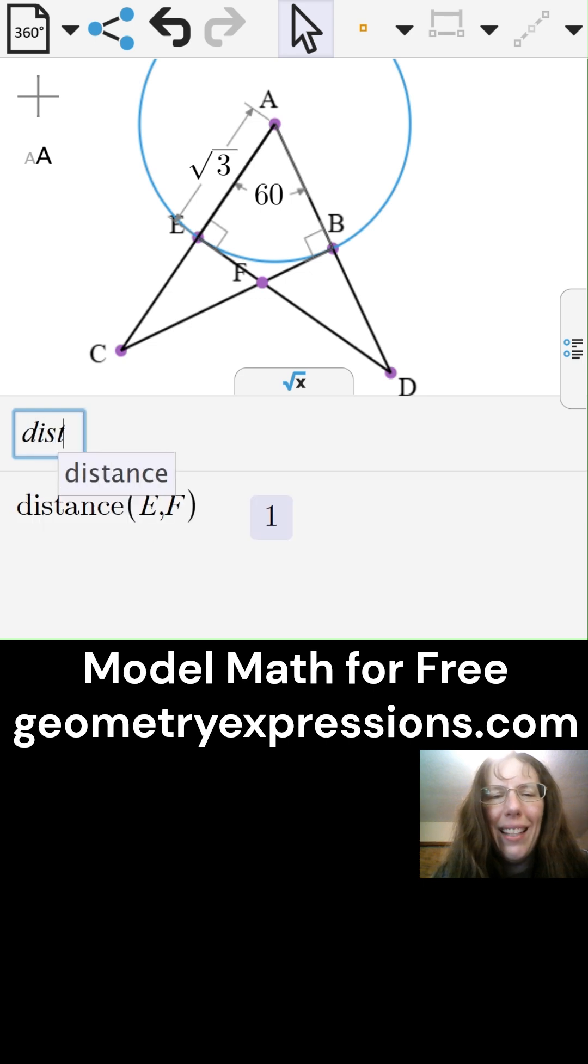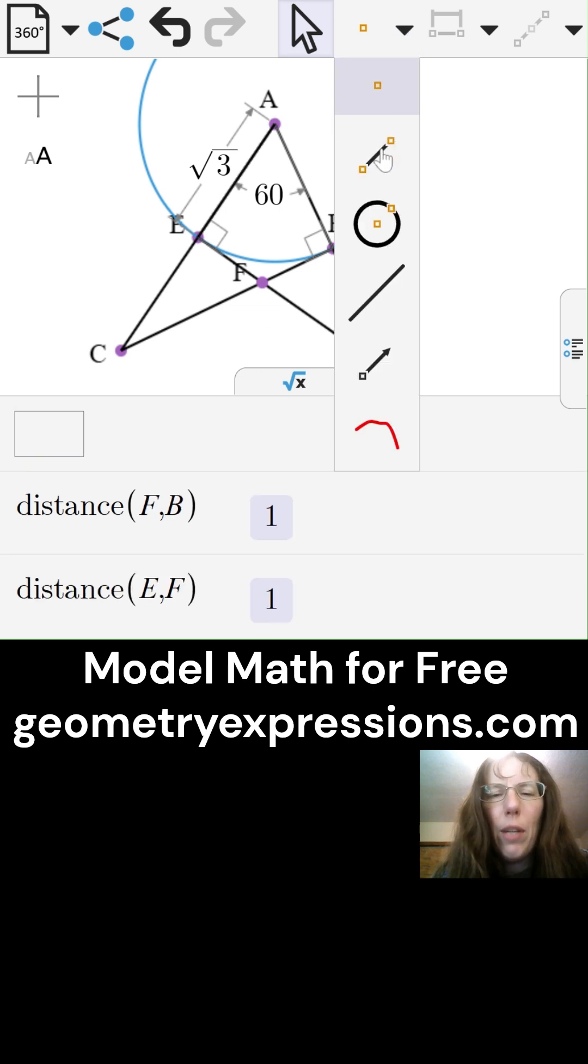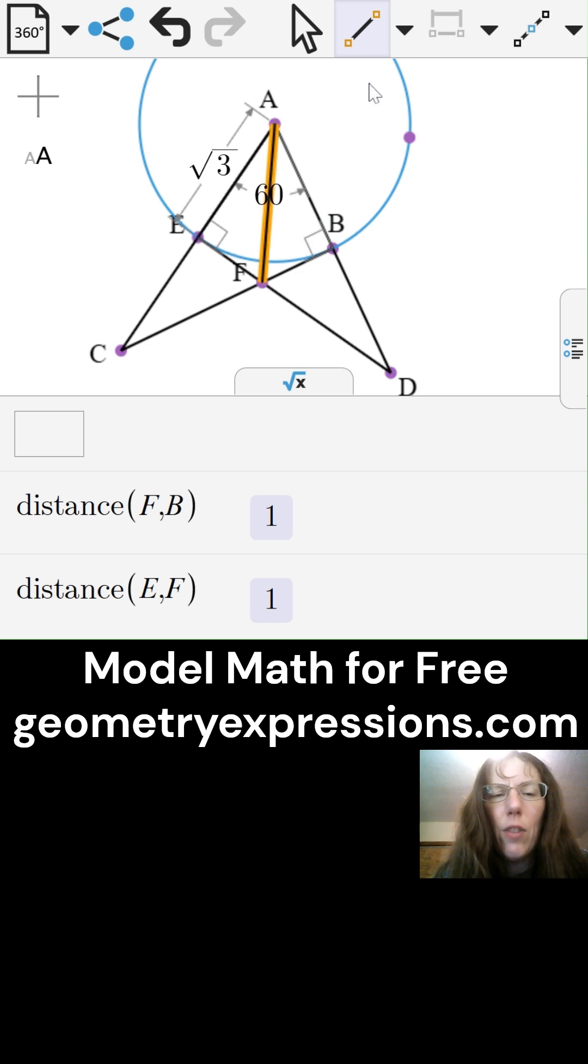Interesting! I am seeing a 1 to 2 to the square root of 3 ratio. A characteristic of a 30-60 right triangle.